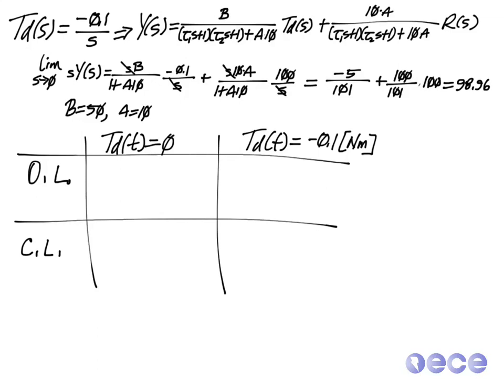So for the open loop case with no disturbance, we choose K equal to 1 over 10, and we get a steady state value equal to 100, so that's exactly what our input value is. In the closed loop case, we choose K equal to 10, and our steady state value is 99 radians per second.